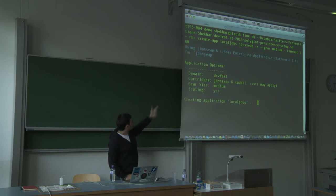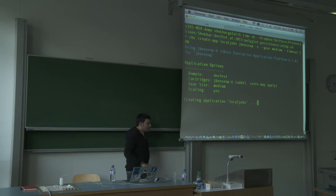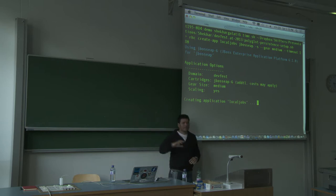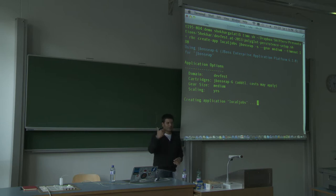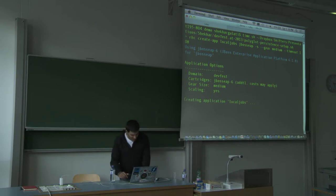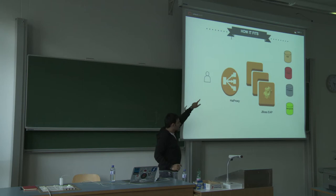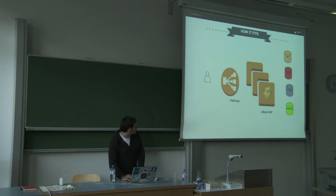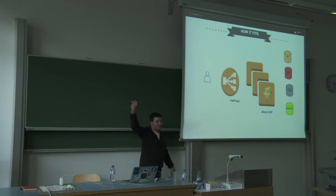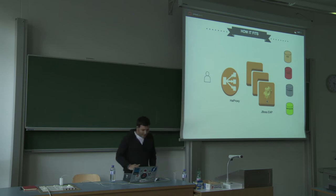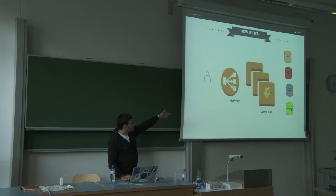You can see the application is now being created. OpenShift has deployed the default application with HAProxy and created a public DNS so the app is available over the internet. Now we're adding cartridges. Here is the application architecture: user requests go to HAProxy (the load balancer), which routes them to multiple JBoss EAP application server instances. On the backend we have MongoDB, PostgreSQL, Redis, and Solr for full-text search.